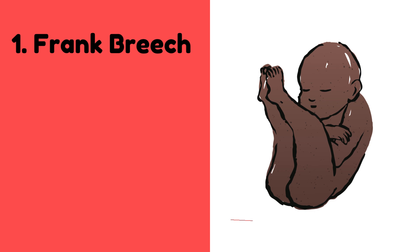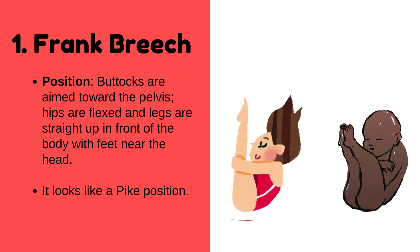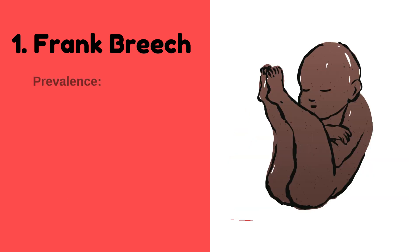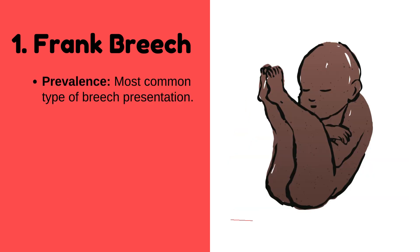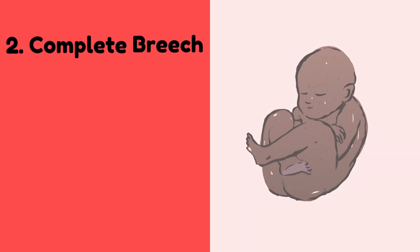Number one: frank breech. In this position, the buttocks are aimed toward the pelvis, hips are flexed, and legs are straight up in front of the body with feet near the head — it looks like a pike position. Frank breech is the most common type of breech presentation and is often considered for vaginal delivery if no other complications exist.